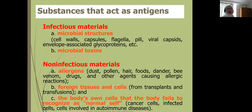The substances that act as antigens can be infectious or non-infectious material. Among infectious materials: microbial structures such as cell wall, capsule, flagella — of course they should be protein — and microbial toxins. Among non-infectious materials: allergens like dust, hair, food, etc.; foreign tissues and cells from transplant or transfusion; and sometimes the body's own cells that the body fails to recognize as normal, like cancer cells involved in autoimmune disease. In those cases they are known as autoantigens, and the antibodies formed are known as autoantibodies.